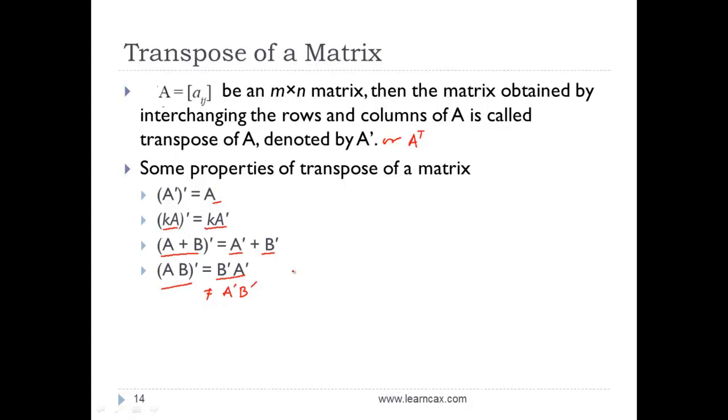One simple way of verifying this: if A is a matrix of order 2×3 and B is a matrix of order 3×4, then when we multiply AB, we get a matrix of order 2×4. When we take the transpose of this, we get 4×2.